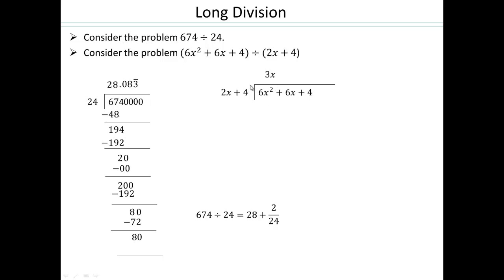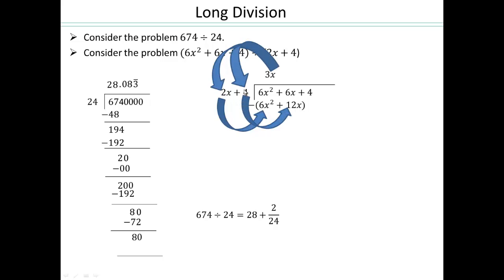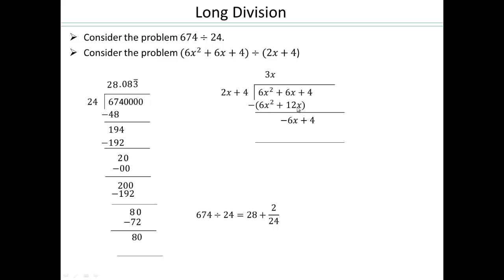So I look at the highest term here, which is the 6x squared. 2x times what gives me 6x squared? That's my 3x. 2 times 3 is 6, x times x is x squared. So 3x times 2x is 6x squared, and 3x times 4 is 12x. That's how you write this polynomial — just like we wrote 2 times 24 is 48. So 3x times this whole polynomial gives the answer here: 3x times 2x is 6x squared, 3x times 4 is 12x. Now you do a subtraction: 6x minus 12x gives you negative 6x. Remember to have this minus sign all the way across — 6x squared minus 6x squared will be gone.